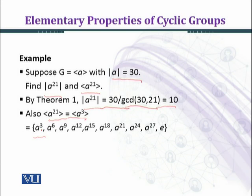Now we see what the elements in the group generated by a^3 are: a^3, then a^3 squared which is a^6, then a^3 cubed which is a^9, and similarly proceeding further we get a^12, a^15, ..., a^27, and finally e, the identity. All these are powers of a^3, and a^3 raised to the power 10 is a^30, which equals e.